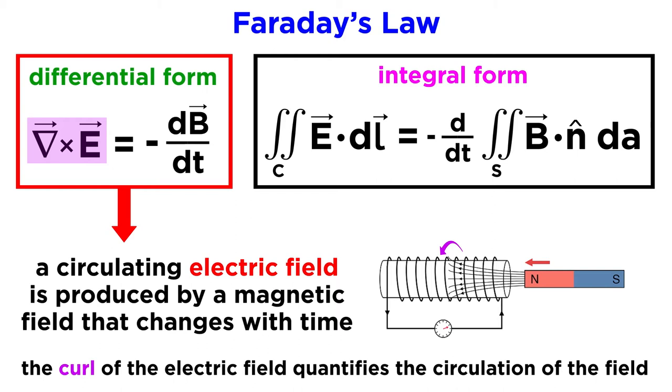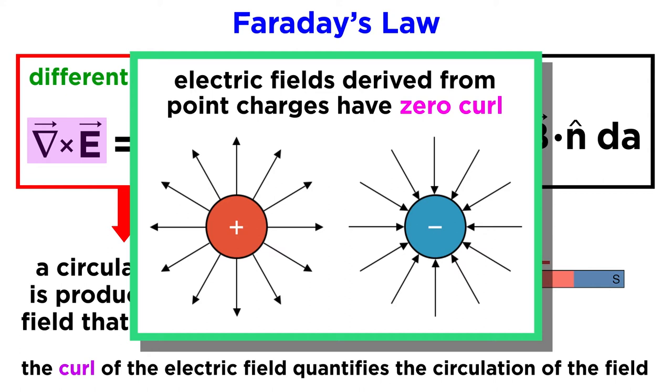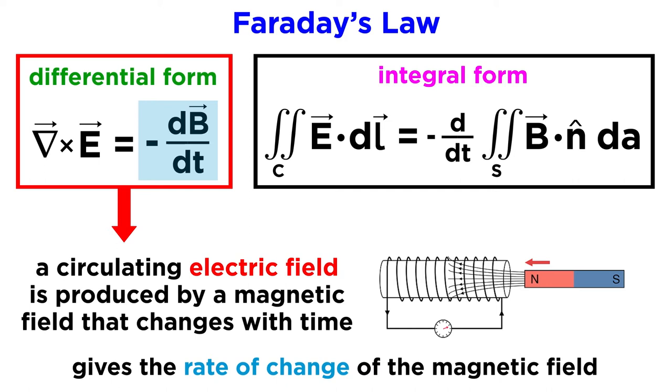The curl measures the circulation of a field about a single point, or essentially how much it curls. For a normal electric field that originates from electric charge, the curl is always zero. This is one of the primary differences between a normal electric field produced by charge and an induced electric field.